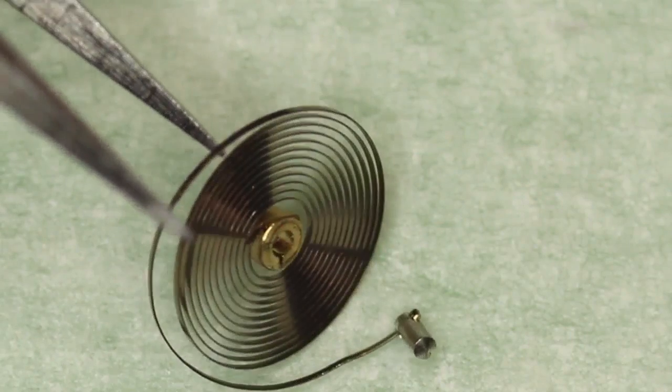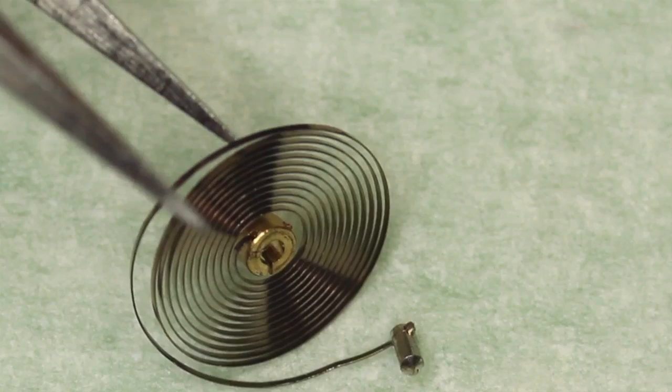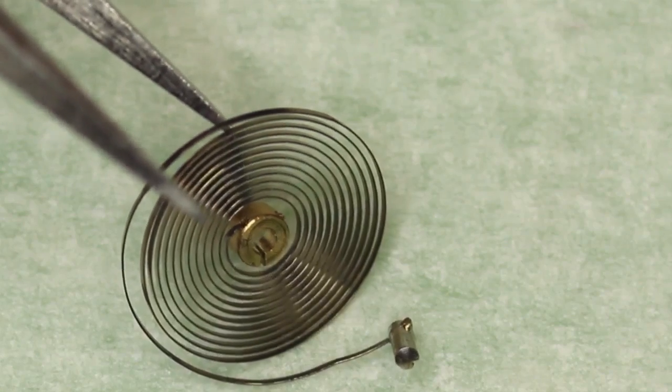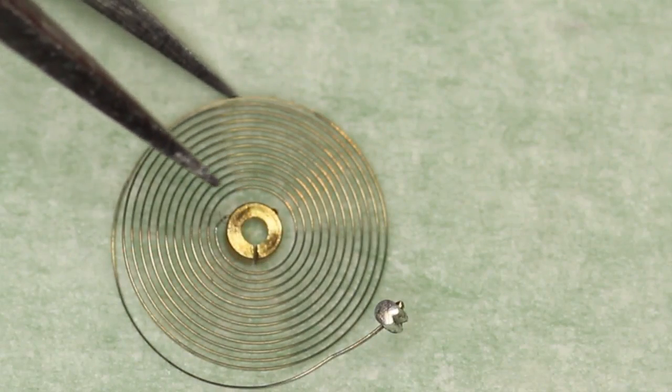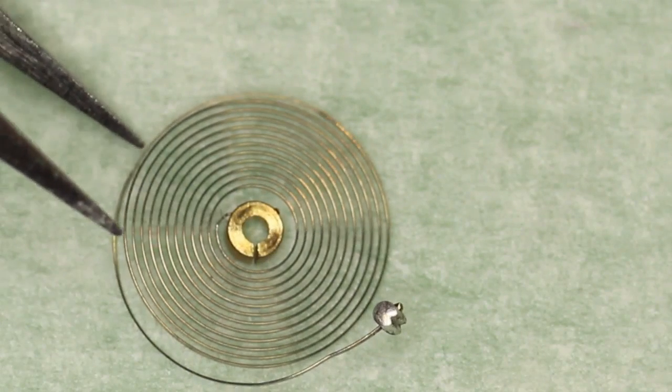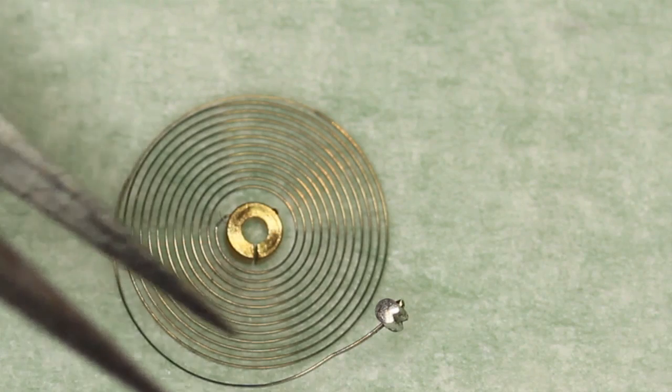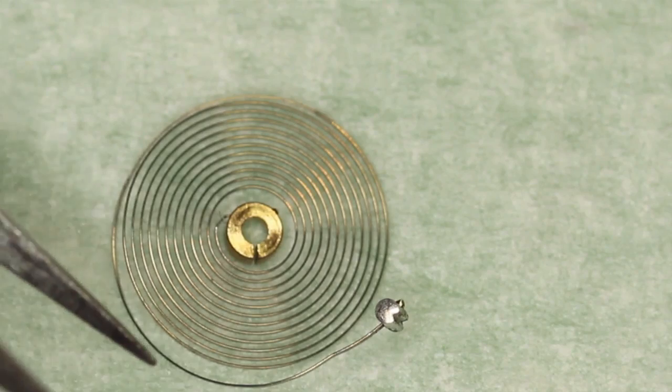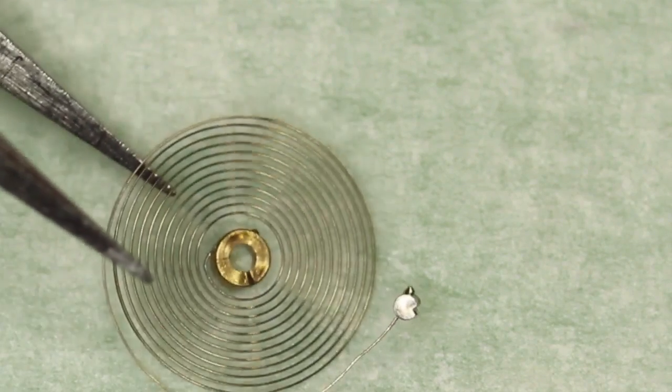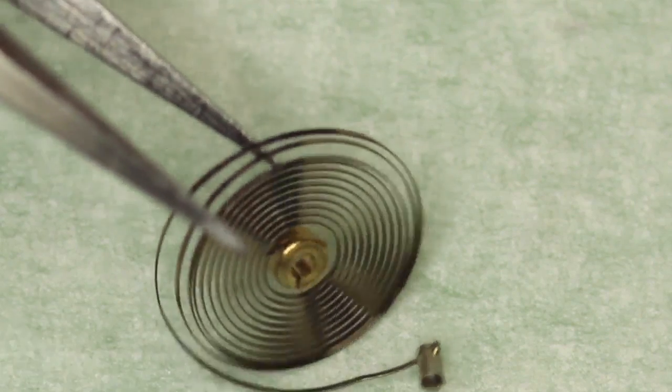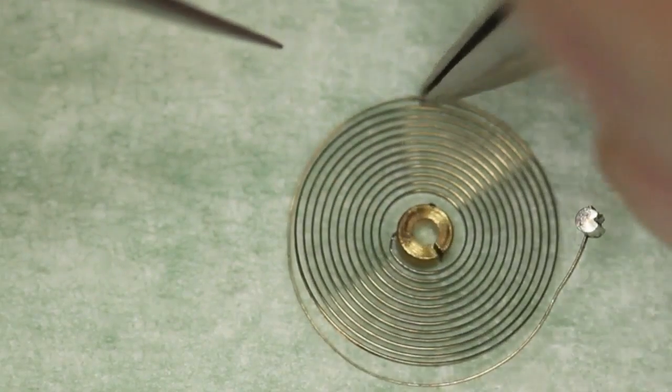So here we are with a closer look at the hairspring. You can see it's twisted downwards, and I've got a good indication of where the twist is. It's at the lowest point where they tend to be meeting. Also, if you look carefully, you'll notice that around halfway round it twists upwards as well.